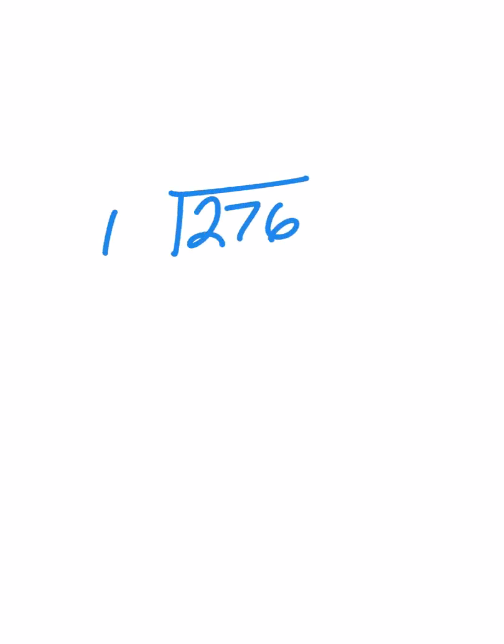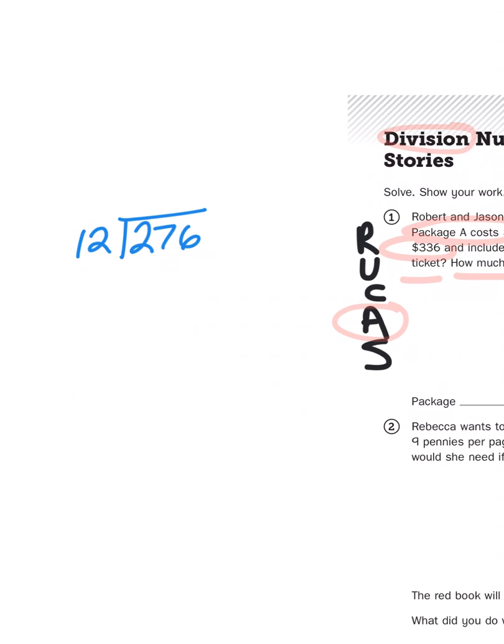And right now, some of you are thinking to yourself, but Mr. Wasserman, we haven't done double-digit divisors yet. This is breaking my brain. Well, never fear, friends, because I have an alternative for you. So instead of dividing 276 by 12, I'm going to first divide 276 by 6, and then whatever answer I get, I divide that in half. Because for six games, I need two tickets for both Robert and Jason. So Robert and Jason can split the cost of each pair of tickets. All right, so let's divide 276 by 6, shall we?